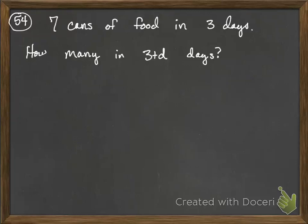So, number 54 says, the dog eats seven cans of food in three days. At this rate,